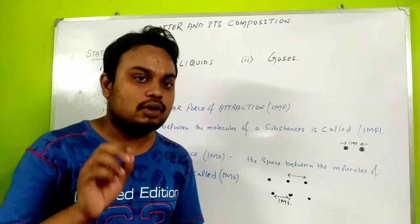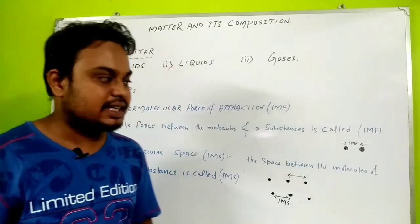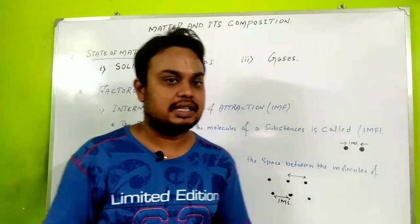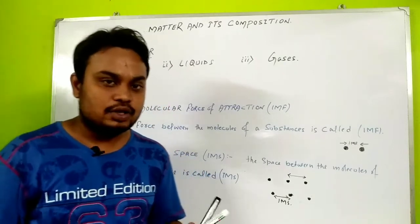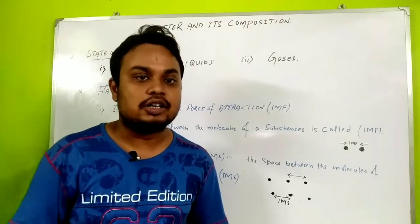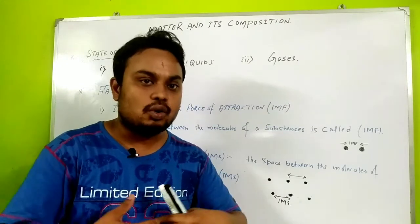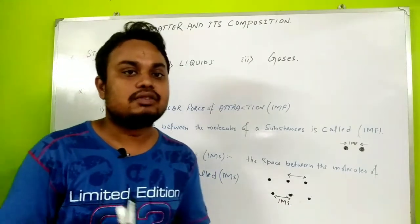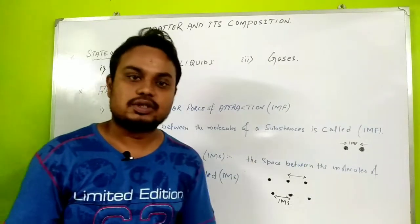Now let's see what are the factors on which the state depends. The state of matter depends on two factors. The first factor is the intermolecular force of attraction — the force between the molecules of a substance is called intermolecular force of attraction.